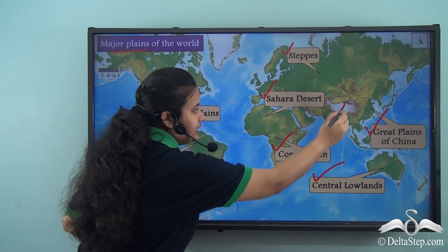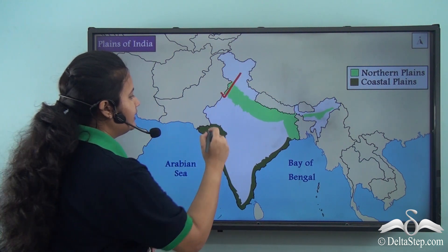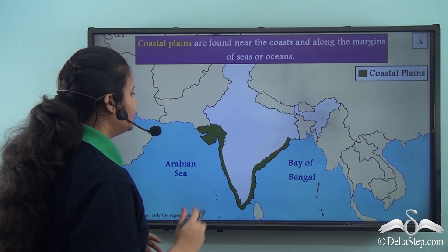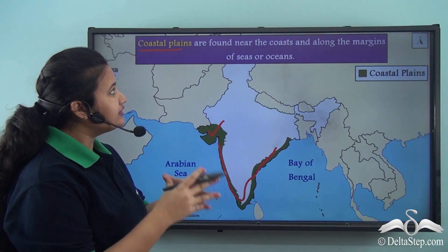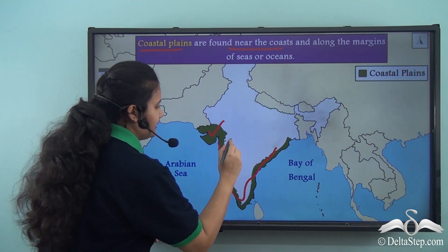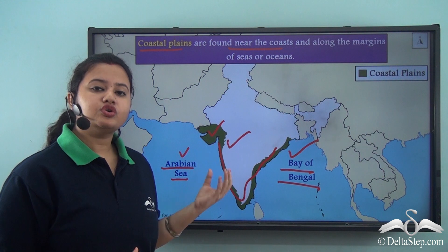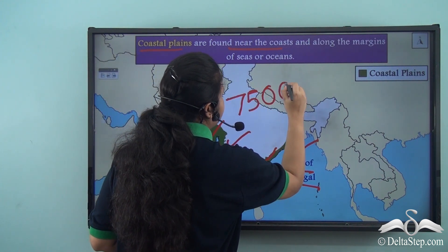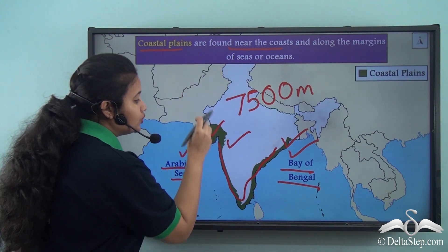Zooming into the map of India, we find that India has two vast plains: one in the northern part and another along the margin of the peninsular plateau. The plains along the margins of the peninsular plateau are known as coastal plains, which are found near the coast. The coastal plains of India are sandwiched between the peninsular plateau and the Arabian Sea and Bay of Bengal, with an average coastline length of 7,500 kilometers.